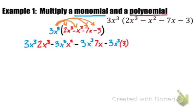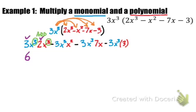So I'm going to focus on 3x cubed times 2x cubed. I have a 3 and a 2, so I multiply those out together and I get 6. Remember, if we have two powers with the same base, all we have to do is add our exponents. So we're multiplying, not adding, the two terms together — we apply the properties of exponents. So we have 3 plus 3, giving us 6x to the 6th.